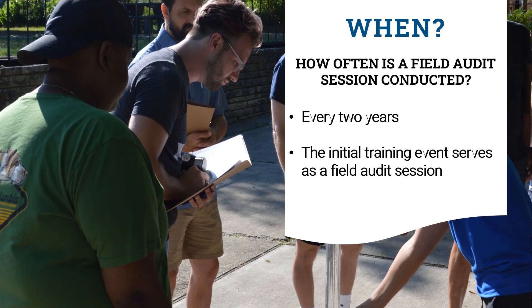When do field audit sessions take place? Field audit sessions must be conducted at least every two years after the initial training has been completed by every Texas Dream Team certified citizen scientist.